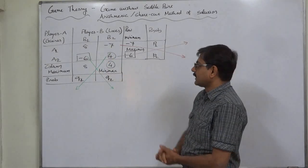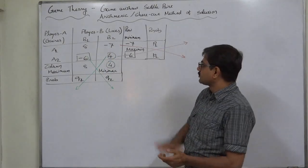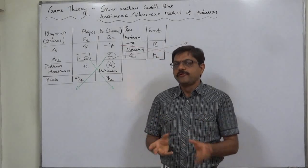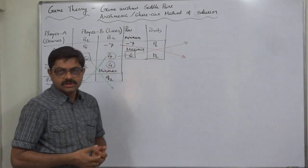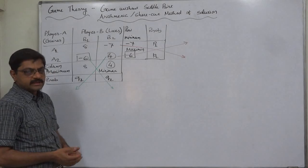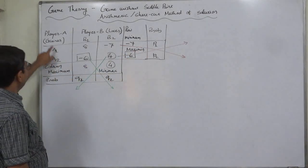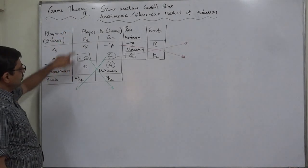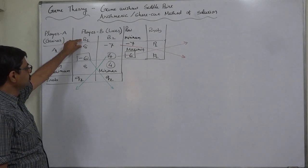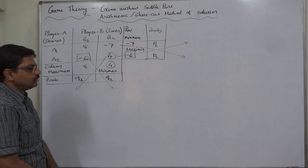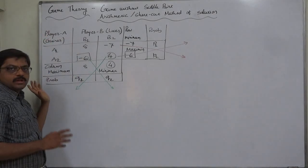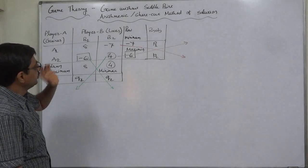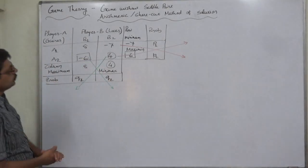I have changed the notation of probabilities from x and 1 minus x, and y and 1 minus y, because 1 minus x and 1 minus y creates some confusion — I came to know that after watching the lectures I had already uploaded. So in this problem I have changed the notation. P1 is the probability that player A selects or uses strategy A1, and P2 is for A2. Similarly, Q1 is the probability that player B selects or uses strategy B1, and Q2 is for B2. Player A is the gainer and B is the competitor, which we consider the loser.